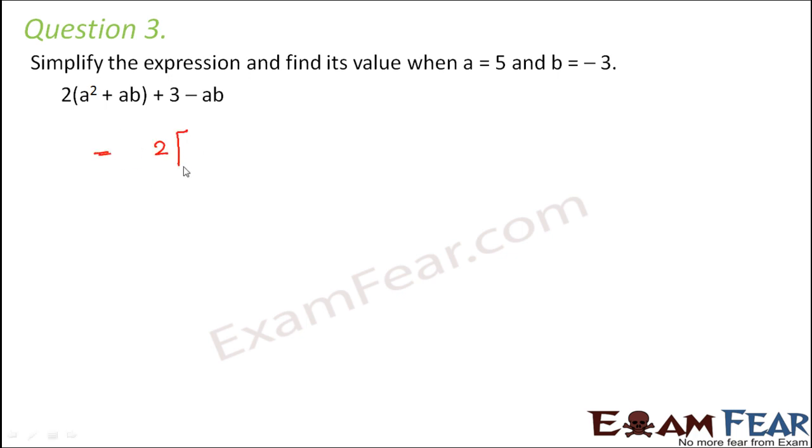So look at this expression. It is 2 into a² plus ab plus 3 minus ab. So in order to simplify this, let us first open it out from the brackets. So 2 into a² will be 2a² plus 2 into ab would be 2ab plus 3 minus ab.